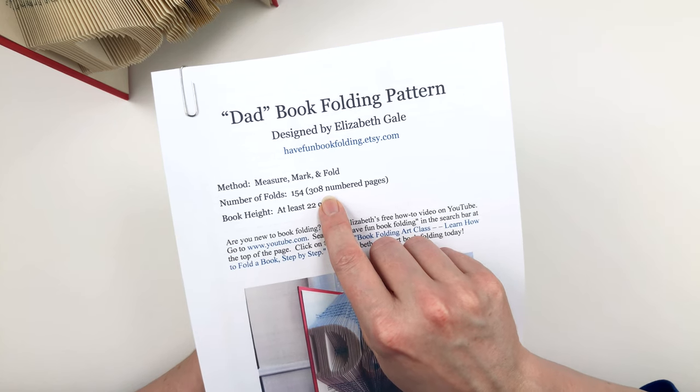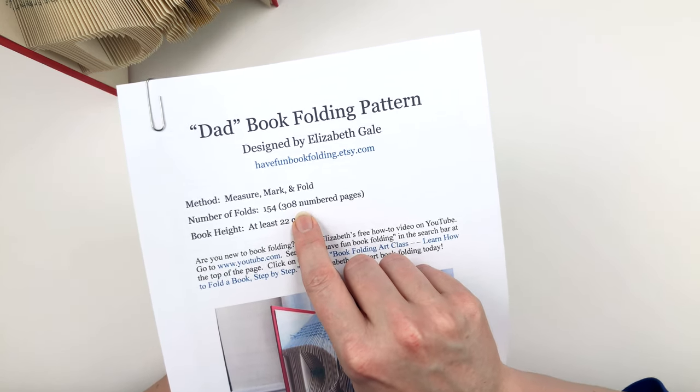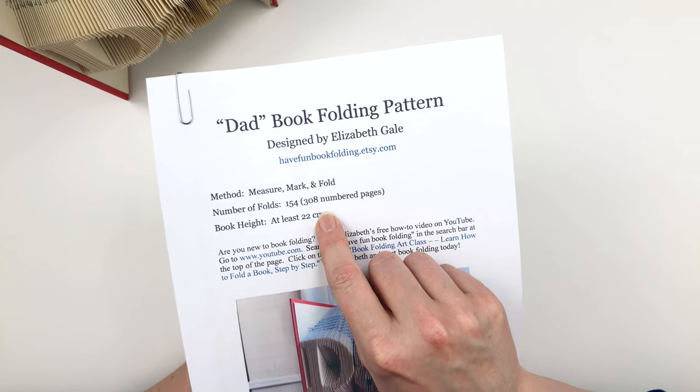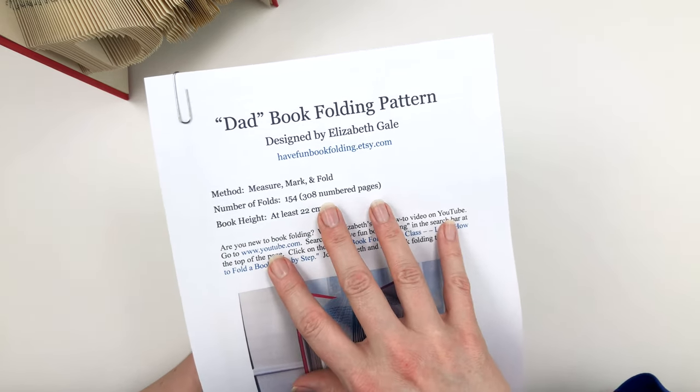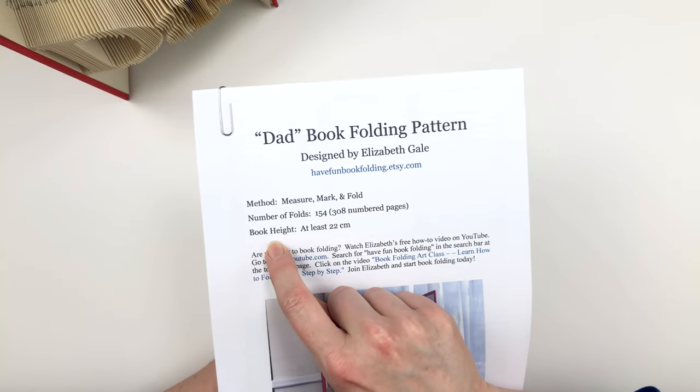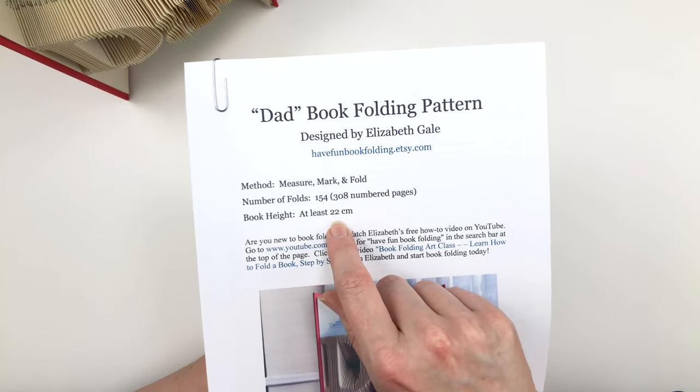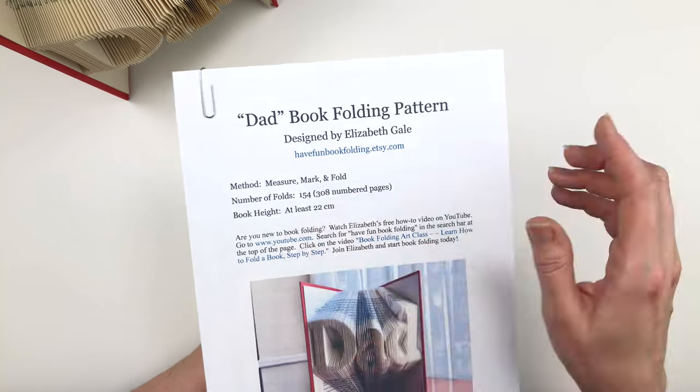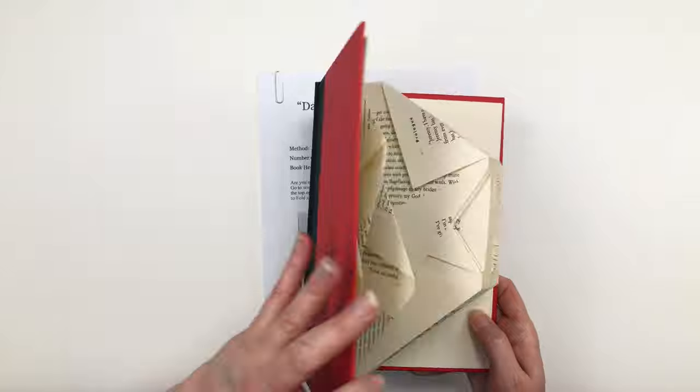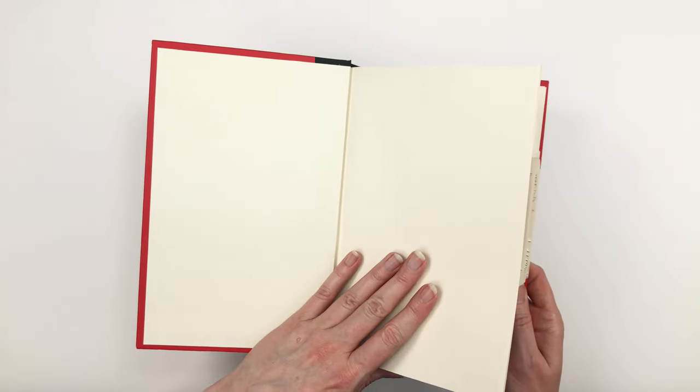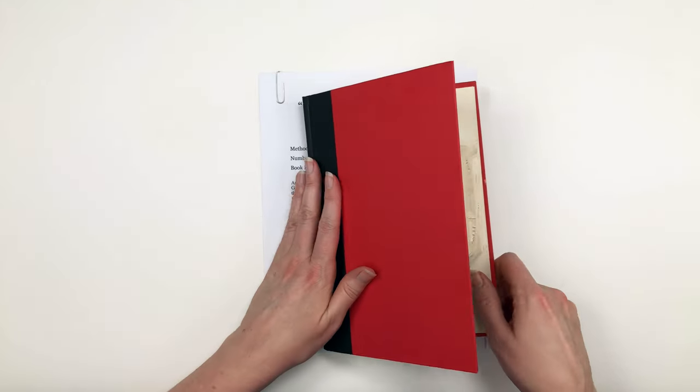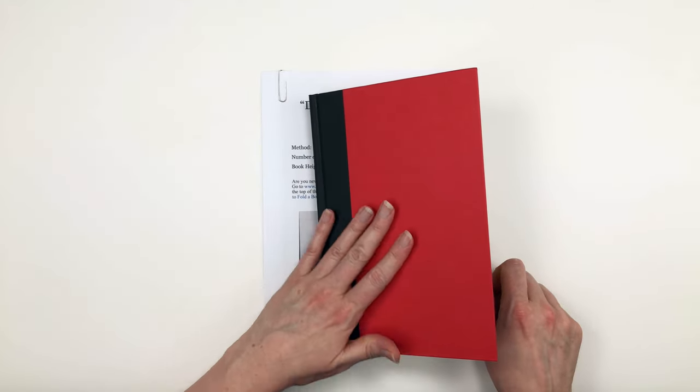So the pattern is telling us we need to find a book that has at least 308 numbered pages in it, so that the dad pattern will fit into that book. If we look at the next line, you'll see the height of the book you'll need is at least 22 centimeters. And when I say 22 centimeters, I'm talking about the cover of the book, not the pages inside. The pages inside of a book are always shorter than its covers.